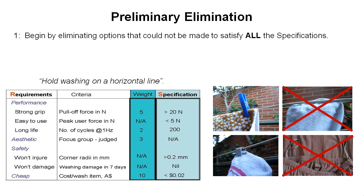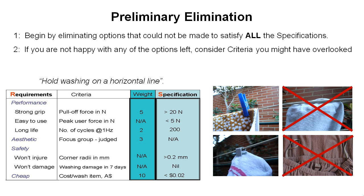So now we've already halved the possible solutions we want to be considering — we've got two left. The next step in our process is to look at these solutions very carefully and think about whether we're actually happy with all the options that are left. And if we're not happy with any of them, we should consider what criteria we may have overlooked initially. So I'm going to take a look at the C-shaped clip, the tapering clip, and the sprag.